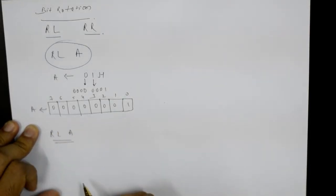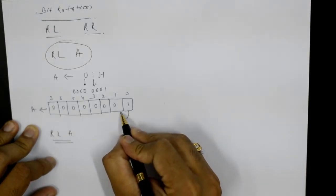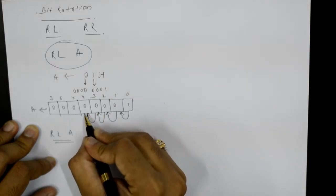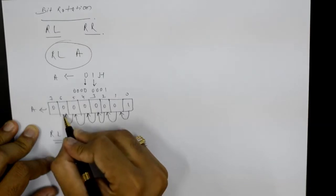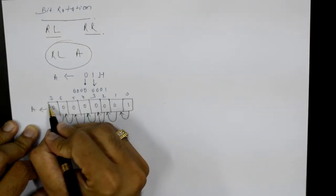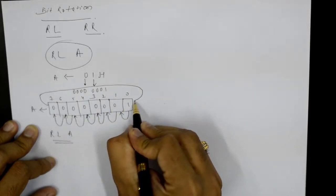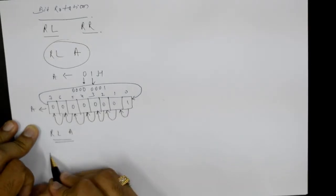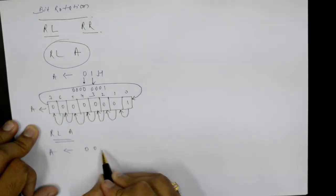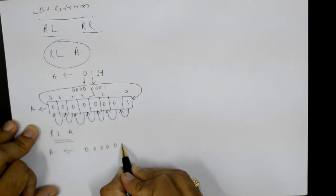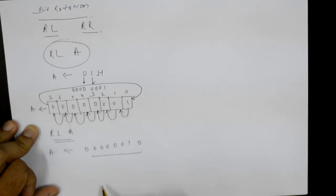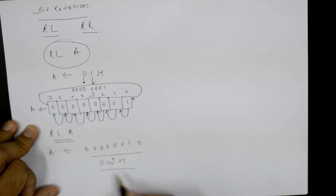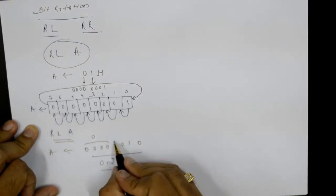If I execute the RL A instruction on the accumulator, the bits are going to be shifted to the left side. Every bit will be shifted one position to the left and the last one will be cycled back to the first position. So now the contents of the accumulator will be 0 0 0 0 0 0 1 0.